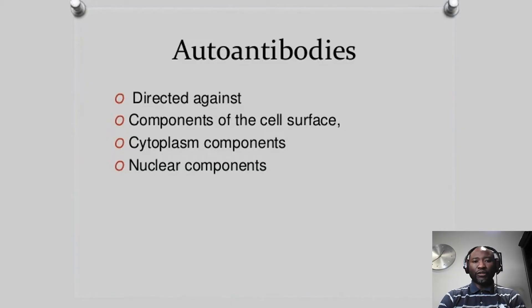First of all, you have to get a very clear understanding of what auto-antibodies are. Auto-antibodies are proteins directed against components of cell surface. They can be directed against the components of cytoplasm and also against nuclear components and mitochondria. Basically, small structures within the cells can have auto-antibodies directed against them. Auto-antibodies are abnormal in the sense that the organism has proteins that have been formed attacking the organism itself, and these have been implicated in causing disease in conditions such as lupus, systemic sclerosis, and other diseases in the rheumatological field.